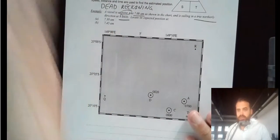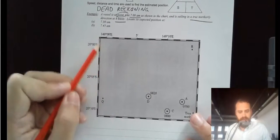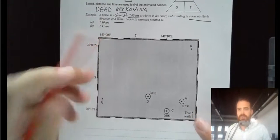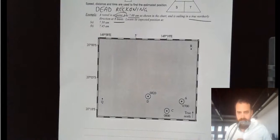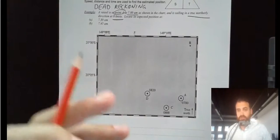This one's easy because it's just going straight up. It's going north. Locate its expected position at 7:30 and 7:45. So it uses this expected idea. Now that means that it's not an exact value.